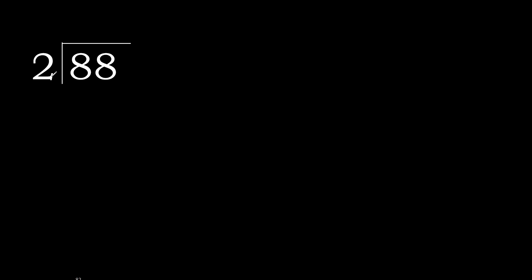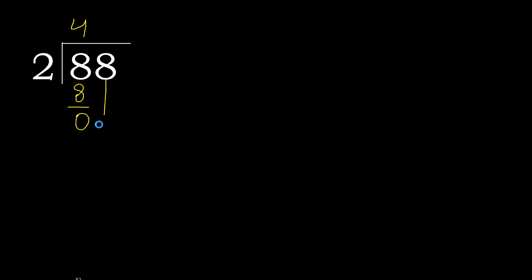88 divided by 2. 8 is not less, therefore with 8: 2 multiplied by which number is nearest to 8 but not greater? 2 multiplied by 5 is 10 — 10 is greater. Multiply by 4 is 8, ok, not greater. 8 minus 8 equals 0. Next.